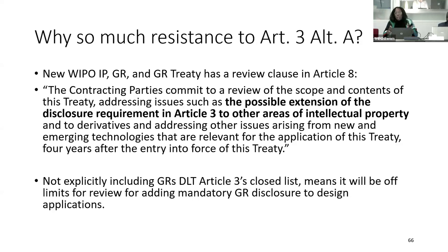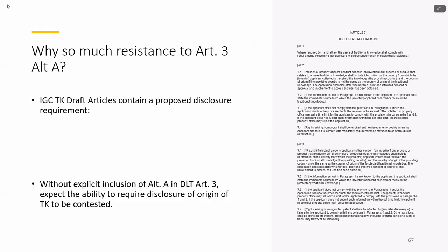You need the policy space for getting to this review provision in four years and seeing whether it makes sense to have mandatory disclosure of origin. Again, the DLT is just permissive. And in the draft traditional knowledge articles that we'll be looking at in IGC 48 and 49 in December, there are four alternatives — but one is: intellectual property applications that concern any process or product that relates to or uses traditional knowledge shall include information on the country from which the applicant collected or received that knowledge. If Alt-A is not in Article 3 of the DLT, you carve out designs from intellectual property in the draft TK document — not going to even be able to consider it.